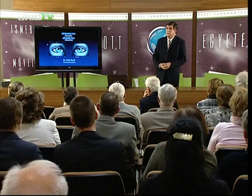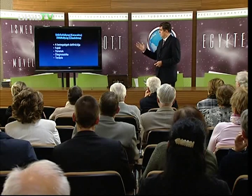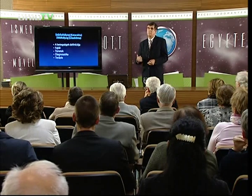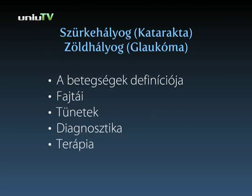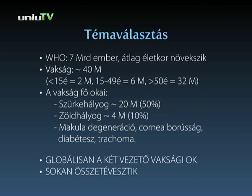Sokszeretettel köszöntök mindenkit, és köszöntöm egyben a tévénézőket is. A szürkehályog és a zöldhályog a két témája mai esti előadásnak. A betegségek definíciójáról, különböző fajtáiról, tüneteiről, diagnosztikai módszerekről, illetve a terápiás lehetőségekről lesz szó. Kevesen tudják, hogy mintegy 40 millió ember él vakon a Földön. A szürkehályog körülbelül 20 millió embert érint, az összes vakember 50%-át, a zöldhályog pedig körülbelül 4 millió embert, tehát az összes vakember 10%-át.